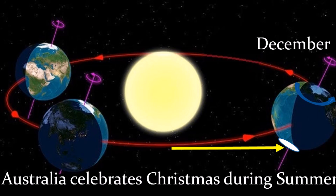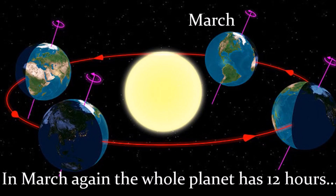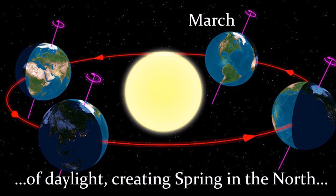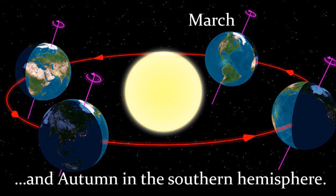Australia celebrates Christmas during summer. In March, again, the whole planet has 12 hours of daylight, creating spring in the north and autumn in the Southern Hemisphere.